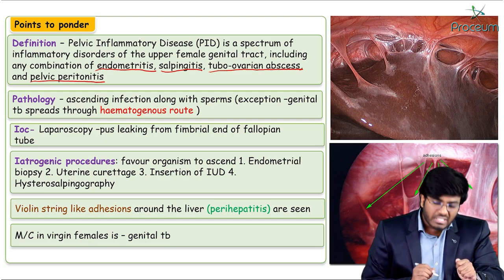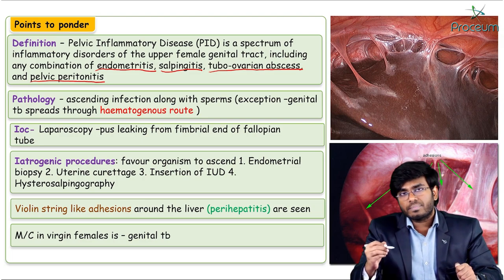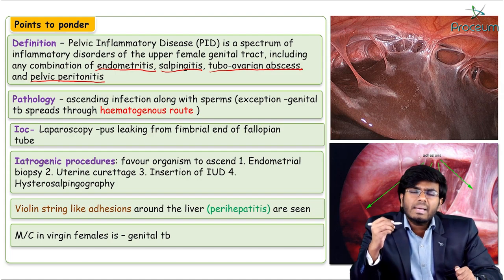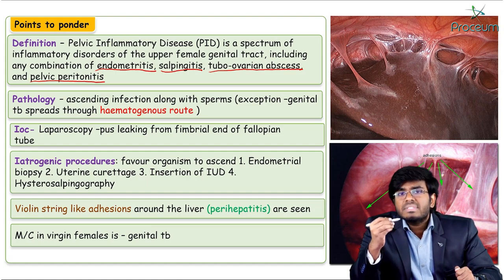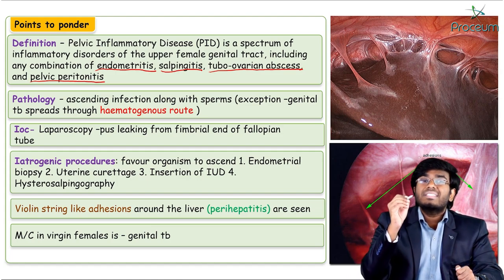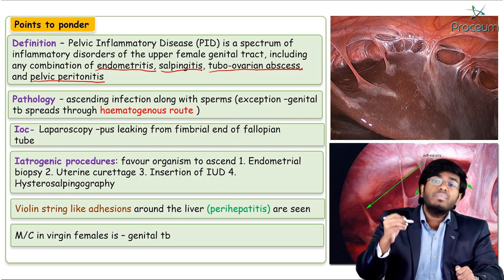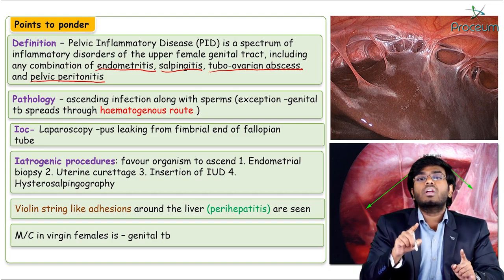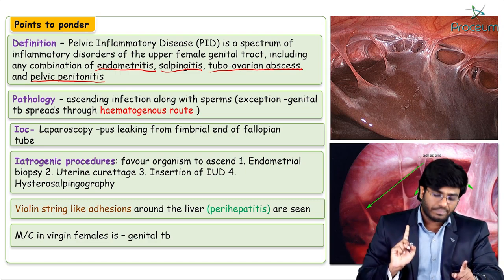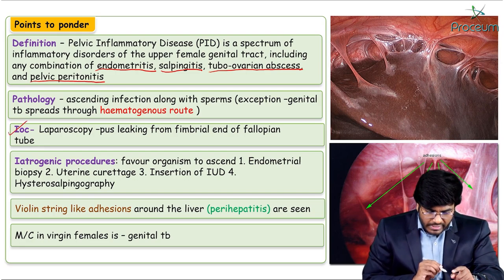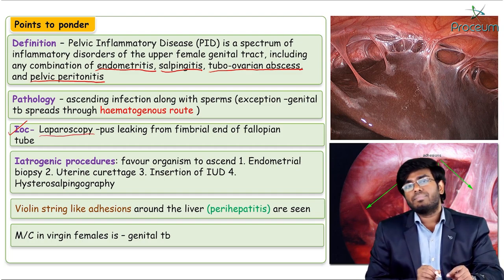The exact pathology of PID is an ascending infection along with the sperms. Infection travels with the ascending sperms into the uterus, then into the fallopian tubes, and from there into the peritoneal cavity causing peritonitis. So it is a one-way ascending infection along with the sperms.